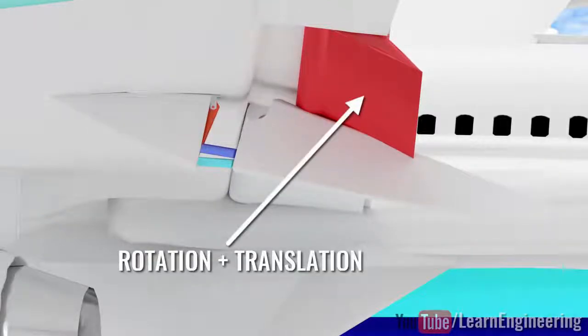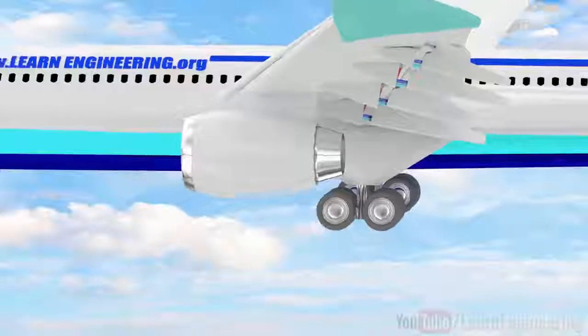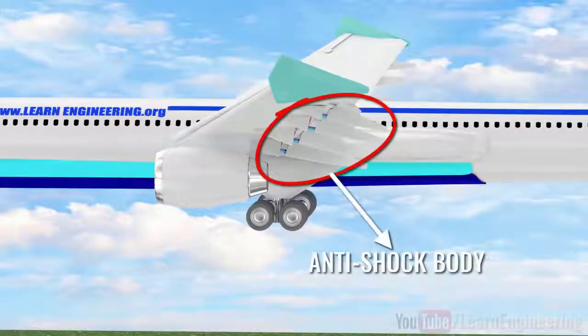These protruding parts also act like anti-shock bodies, thus allowing the airplane to fly more aerodynamically.